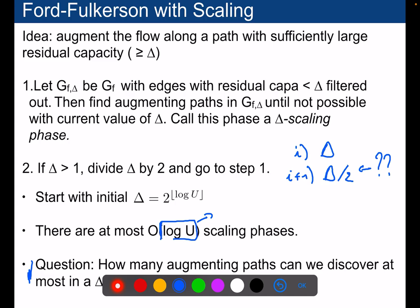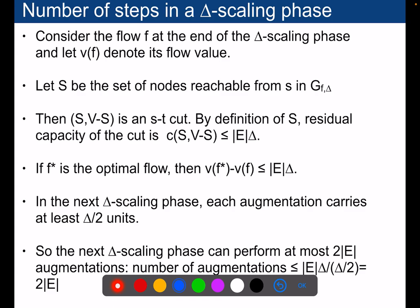Once we have that, we just need to multiply this by the number of augmenting paths. And then we multiply again by the time complexity of the depth first search to find one augmenting path. So let's answer that question of the number of augmenting paths that we may be able to discover at one iteration.